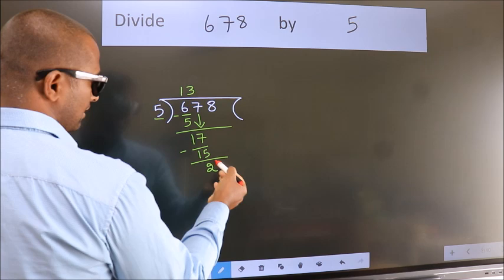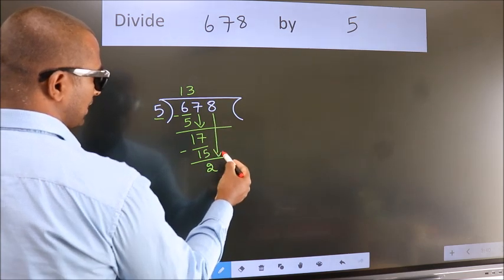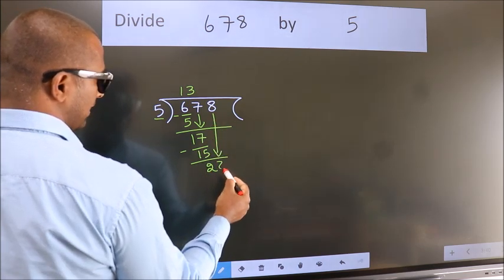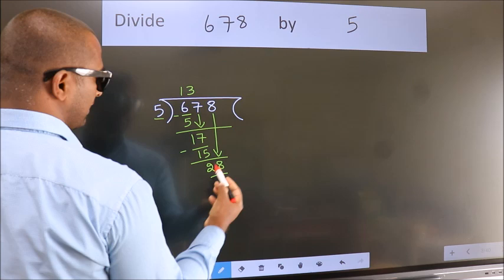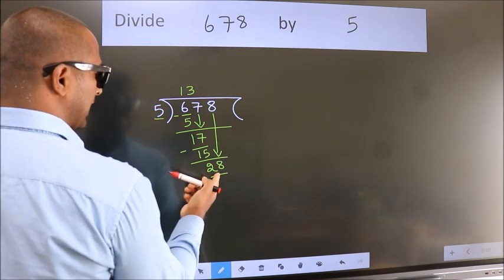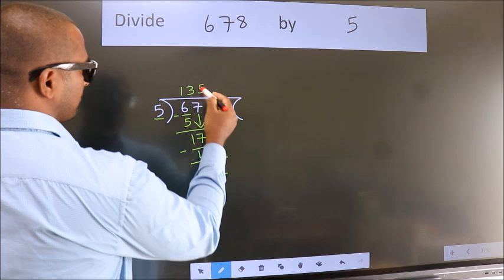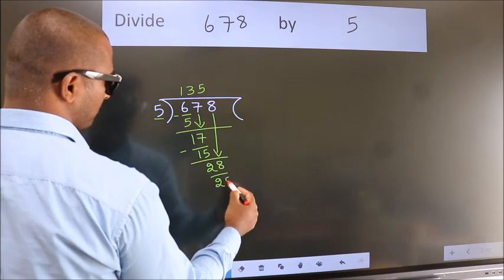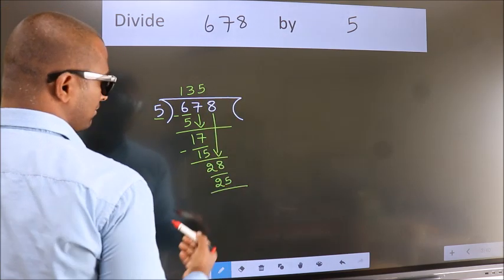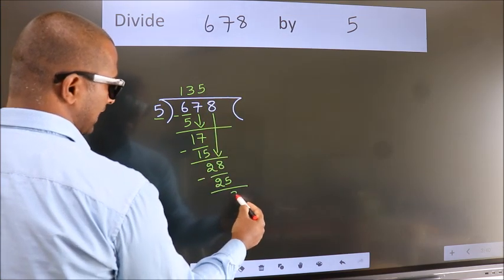After this, bring down the beside number. So, 8 down. So, 28. A number close to 28 in 5 table is 5 fives 25. Now, we subtract. We get 3.